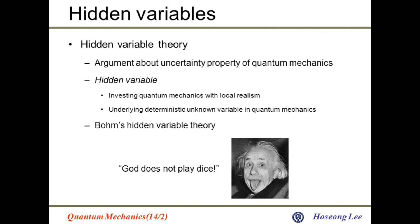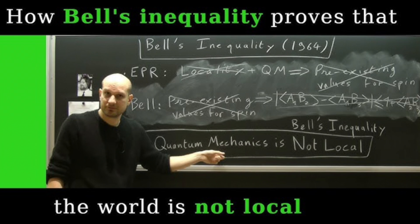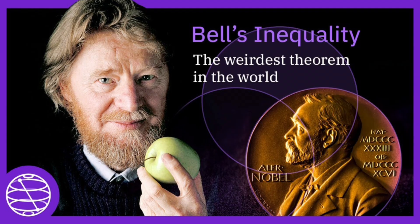Hidden Variable Theories. Alternatives like Bohmian Mechanics or Pilot Wave Theory provide a deterministic interpretation of quantum mechanics where particles have definite positions guided by a pilot wave. Though it can reproduce quantum predictions, it requires a non-local guiding mechanism, which complicates its acceptance.